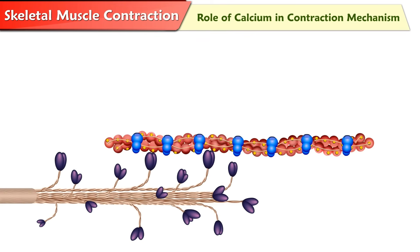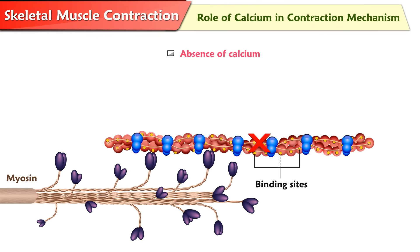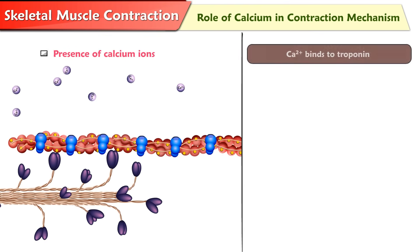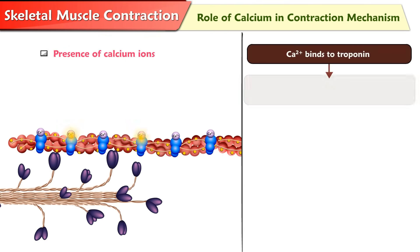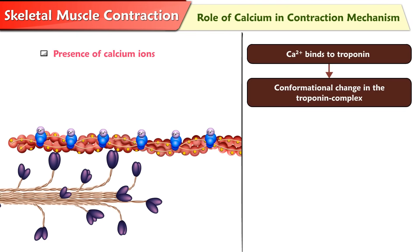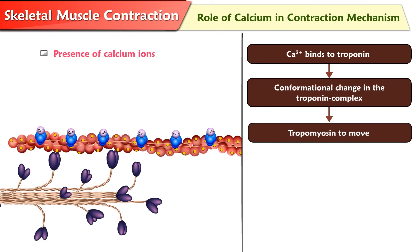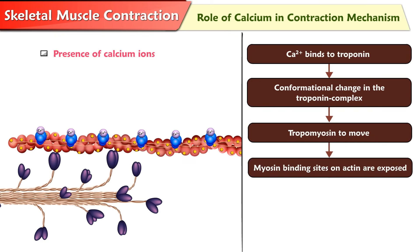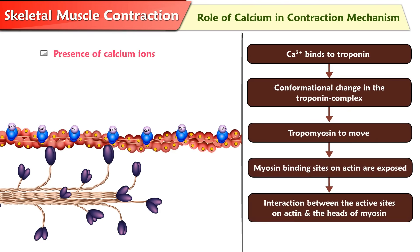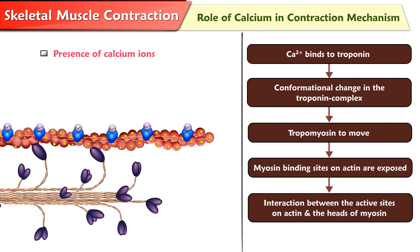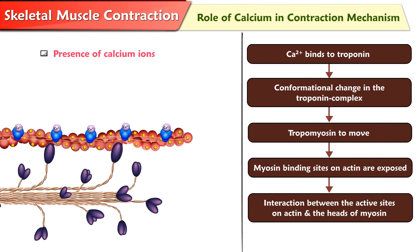The role of calcium in contraction mechanism. In a resting muscle cell, in the absence of calcium ions, tropomyosin blocks or inhibits myosin binding sites on actin. When calcium ions are present, calcium binds to troponin, causing a conformational change in the troponin complex which causes tropomyosin to move, which opens or exposes the myosin binding sites on actin. This results in interaction between the active sites on actin and the heads of myosin.